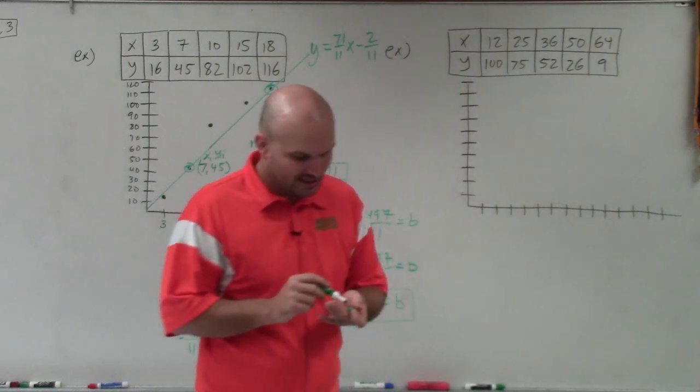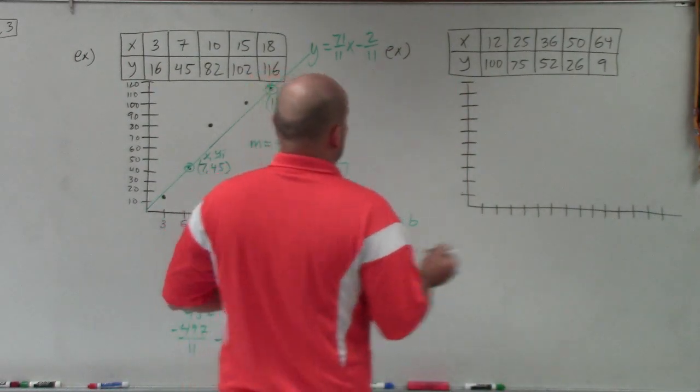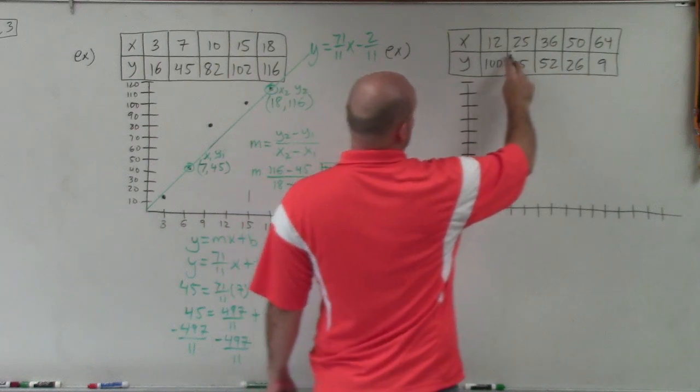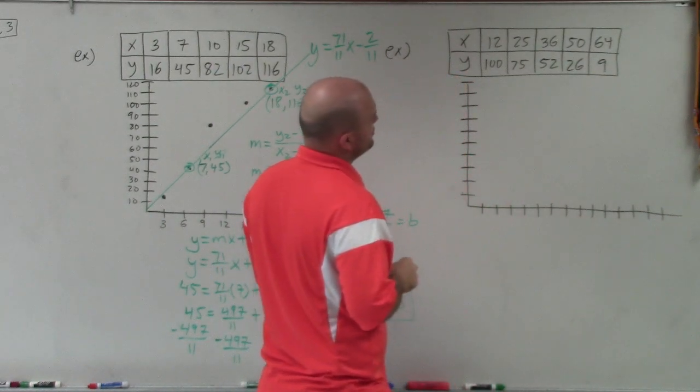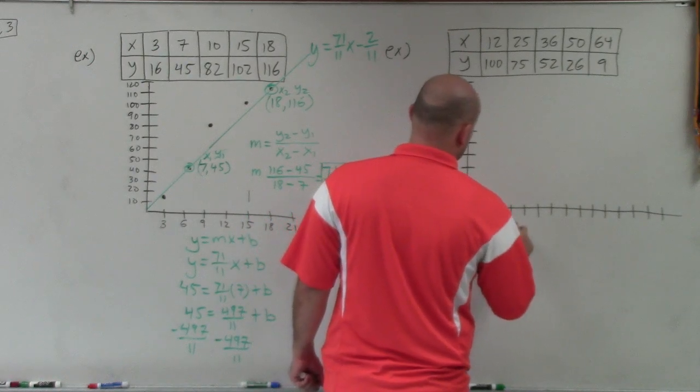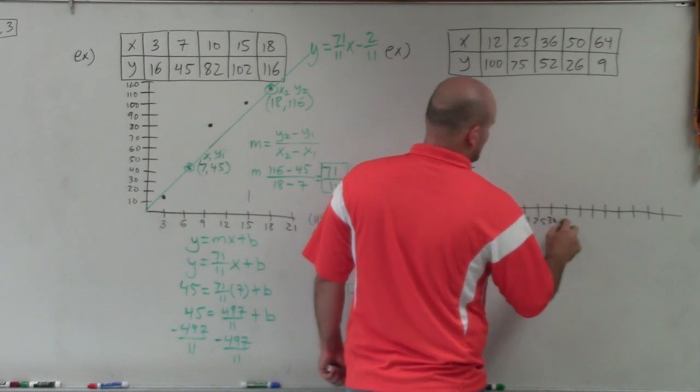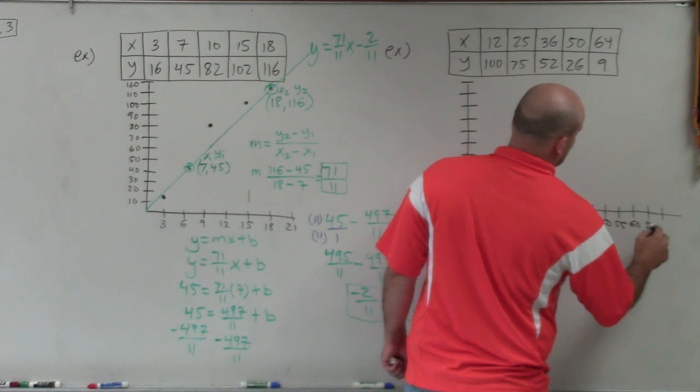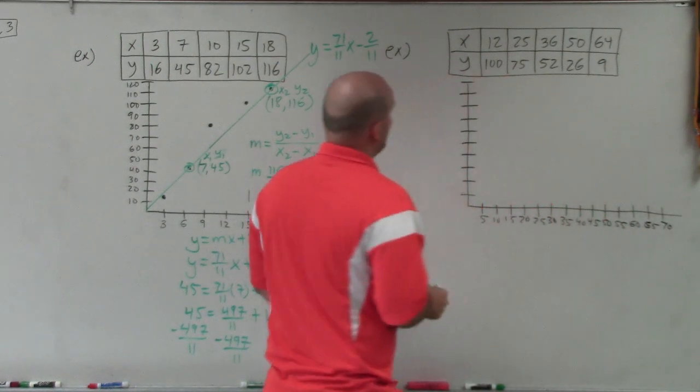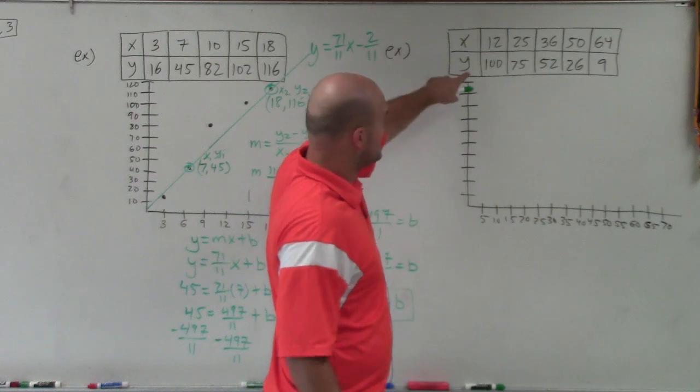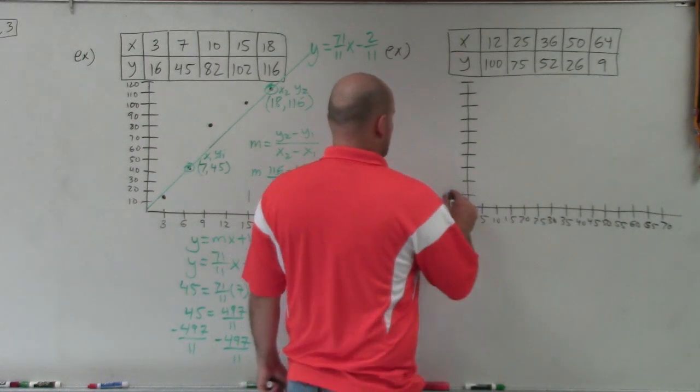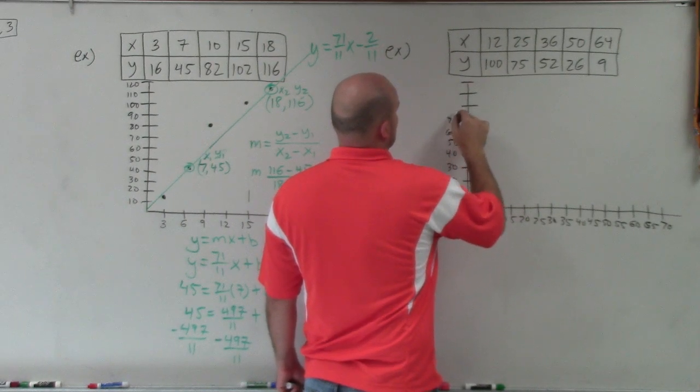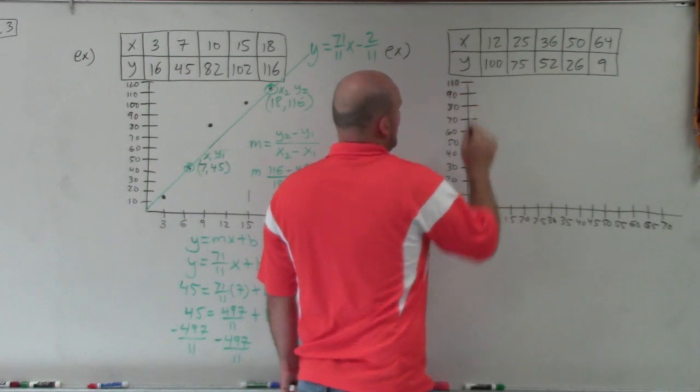All right. So let's go and get into the next one. Again, to go ahead, first thing I need to do is create a scaling. So in this case, to create my scale here, these are going by up from 12 to 64. So I'm going to go by 5. So let's do 5, 10, 15, 20, 25, 30, 35, 40, 45, 50, 55, 60, 65, 70. And then for my y's, you can see it starts at 100 and goes all the way down to 9. So I'm going to go by 10's. So I'll do 10, 20, 30, 40, 50, 60, 70, 80, 90, 100.